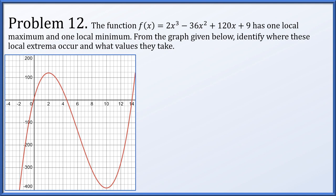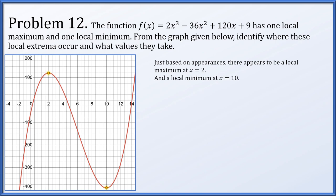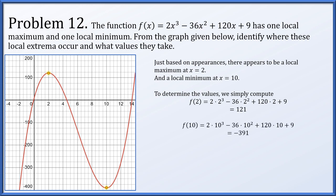In problem 12, f(x) = 2x³ - 36x² + 120x + 9 has one local maximum and one local minimum. From the graph, there appears to be a local maximum at x = 2 and a local minimum at x = 10. Computing: f(2) = 121 and f(10) = -391. So the local maximum is at (2, 121) and the local minimum is at (10, -391).